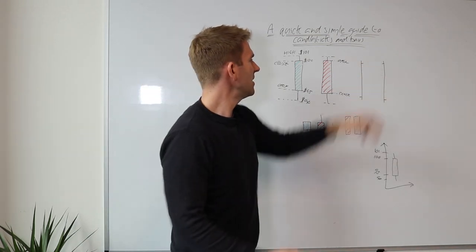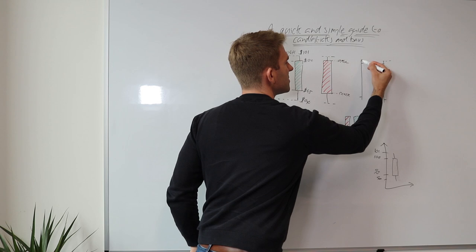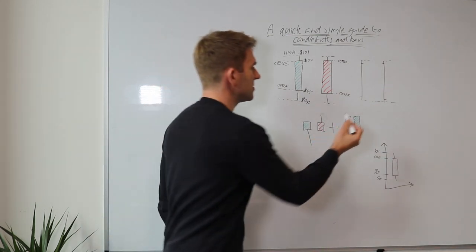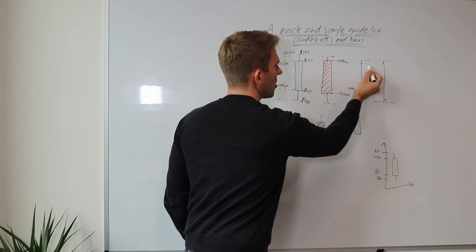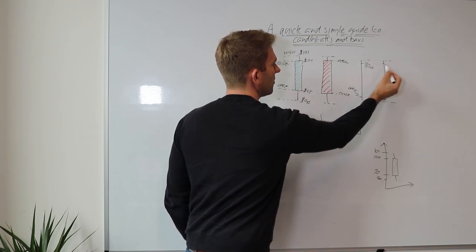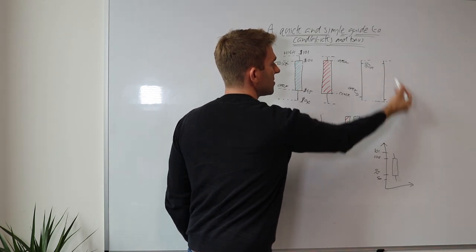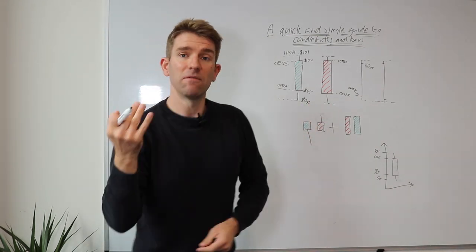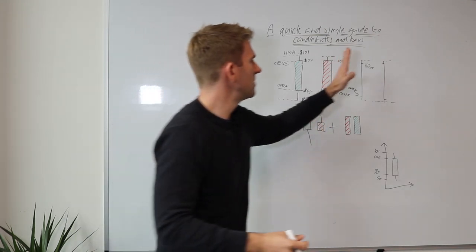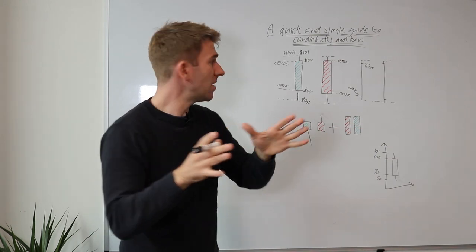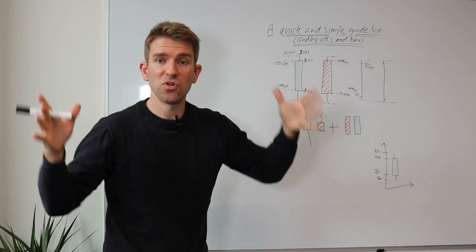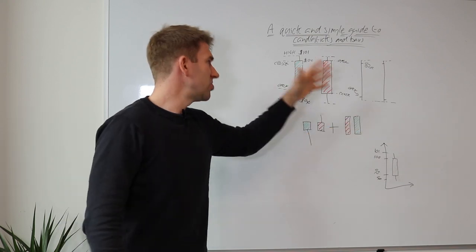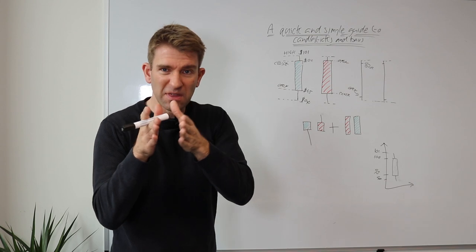Bars are very similar — the high is at the top, the low at the bottom. The little notches on the side indicate the open and close: the left-hand notch is the open and the right-hand notch is the close. You get the same four pieces of information. The reason traders use bars is you can fit more data on screen — many more days — since bars are thinner than candlesticks. It's personal preference.